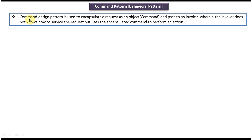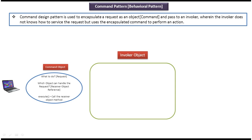Here you can see the client. The client will create the command object. The command object has the request — that is, what to do — and it also has a receiver object reference. The receiver object is the object which will handle the request. The command object also has an execute method, which will call the receiver object's method. The receiver object's method will handle the request and performs some action.